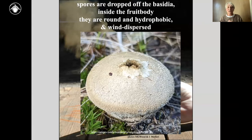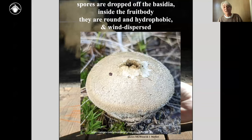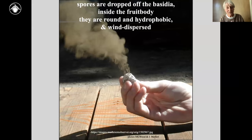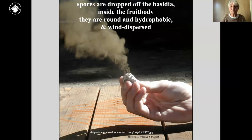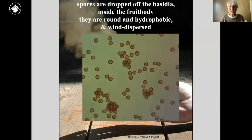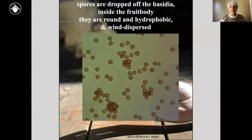Here we have a puffball — no active shooting, but a bellow system. The spores are round, hydrophobic, and wind-dispersed, but something has to push the ball to get the spores out. That somebody can be a hen, a deer that steps on it, a branch, or a raindrop. Then the spores get out and the wind disperses them further. These spores are round, coloured, and slightly spiny. You can only look at them under the microscope by adding washing-up liquid to your medium, because otherwise you see only air bubbles — they're so hydrophobic.